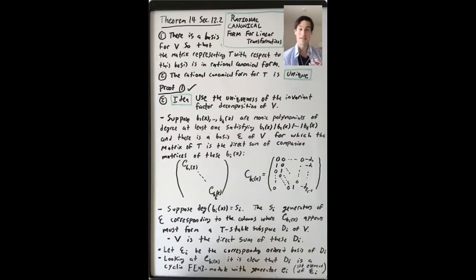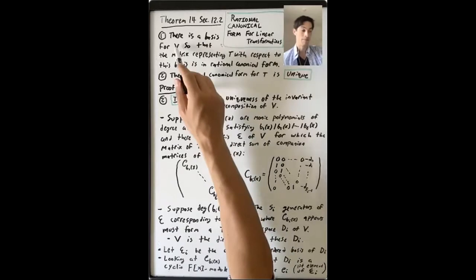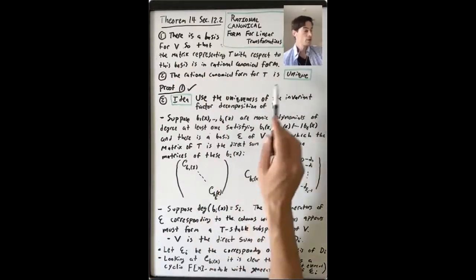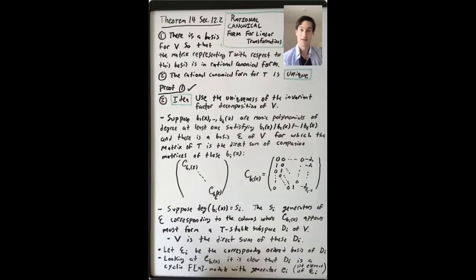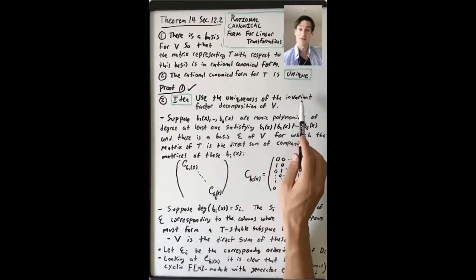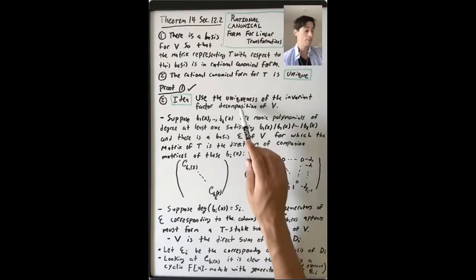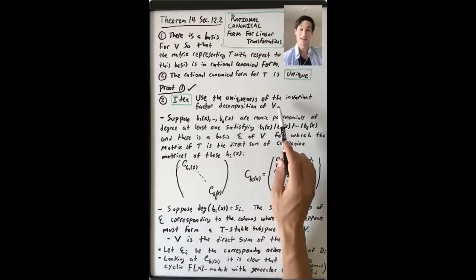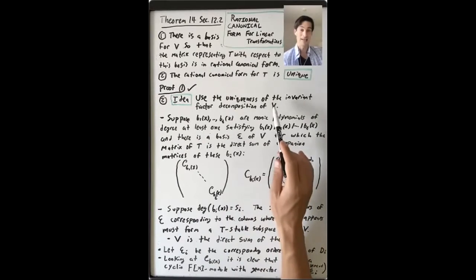We've already seen the proof of the first part by choosing a good basis for V so that the matrix representing T is in rational canonical form. We decompose V as a direct sum of cyclic F[X] modules and make a good choice of basis for each one of those cyclic modules, and that gives us a good basis for V overall. So we just have to prove the uniqueness part. The idea is to use the uniqueness of the invariant factor decomposition of V as a direct sum of cyclic F[X] modules to prove the uniqueness of this matrix representing T.